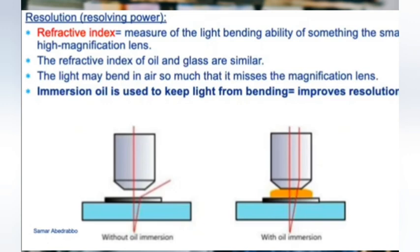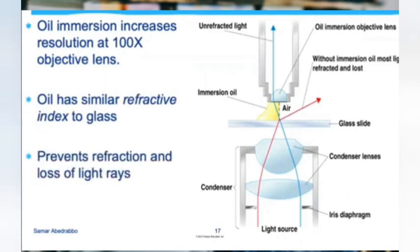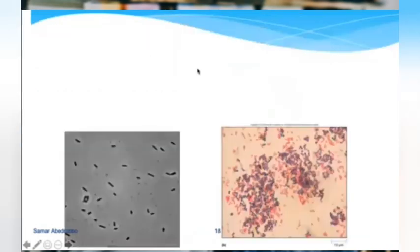We don't use oil with the other objective lenses because the distance is far enough that it won't make a difference. But at a very high objective the lens is almost touching your slide, so you need to trap that light in. Oil immersion increases resolution at 100x objective lens and prevents the loss of light rays.